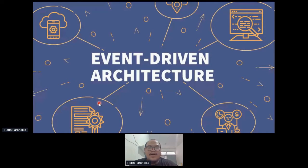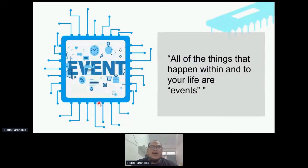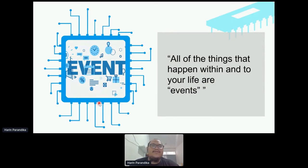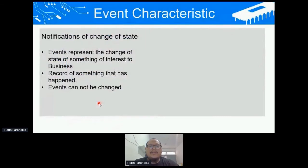To understand event-driven architecture, we need to know what an event is. An event is actually all of the things that happen within and around your life. For example, when you are hungry, being hungry itself is an event. Then there are reactions — you need to eat, and eating is an event. After eating, you need to drink because you are thirsty, and that's another event. In the technical sense, an event is a notification of a change of state.